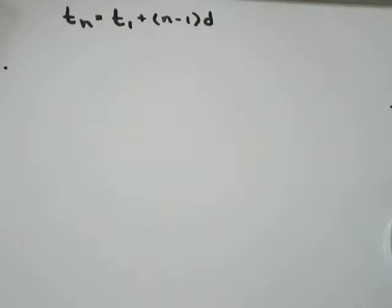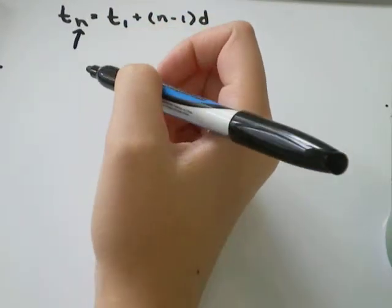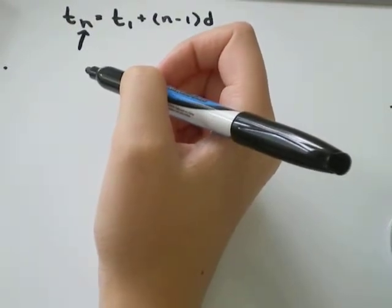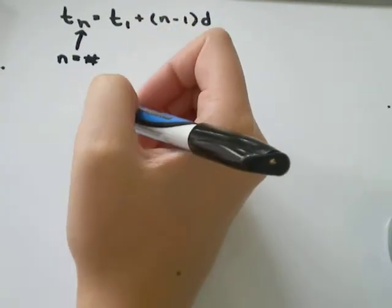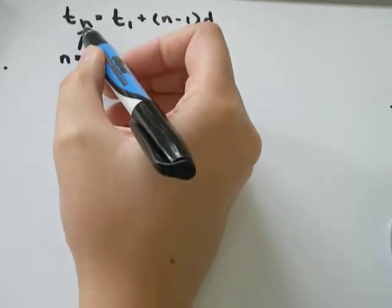And I'll go over some types of questions you could use this for in this video. The first thing you need to know is what t_n stands for. And t_n just means the nth term. So it could be the second term, the third term, whatever. You always just let n equal a number. If you want to find the 17th term, then n is 17.